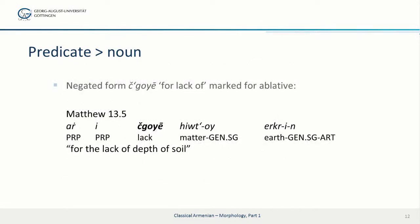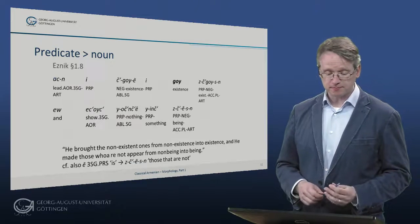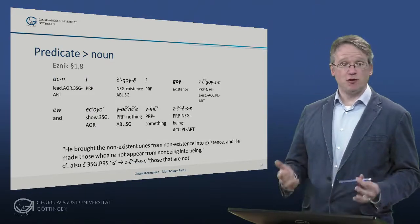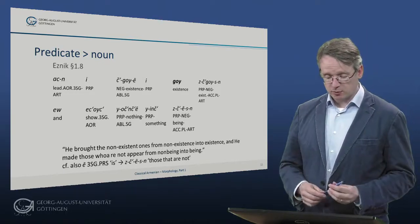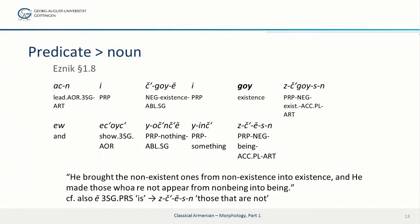We also find the form in the negated form, for the lack of something, marked for appellative case. In Matthew 13:5, we have the negation and appellative marking – the non-existence of something. Jeznik attests also the accusative go. So he brought the non-existent ones from non-existence into existence, and to make those who are not appear from non-being into being.